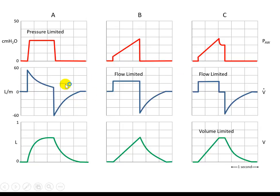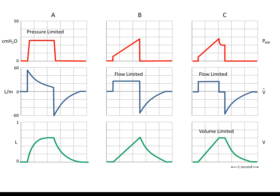After the breath is initiated, there could be another variable called the limit variable. That limit variable could be a limitation on the pressure — the pressure goes up to a certain level and is maintained, such as in pressure support. It could also be flow limited, where the flow goes up to a certain value and does not go above it. Or it could be volume limited, where the volume reaches a certain value and does not increase above that value.